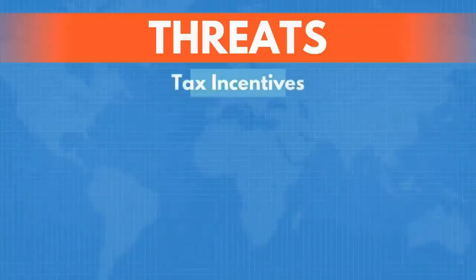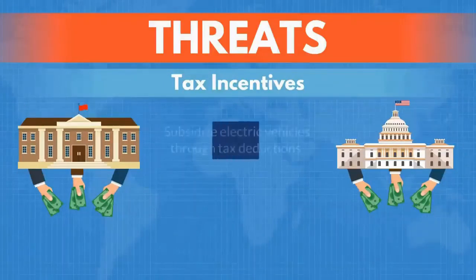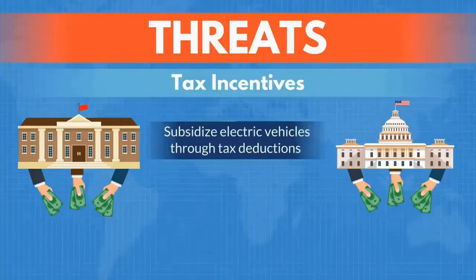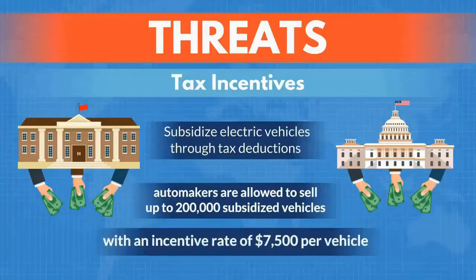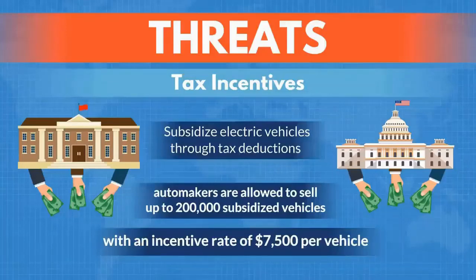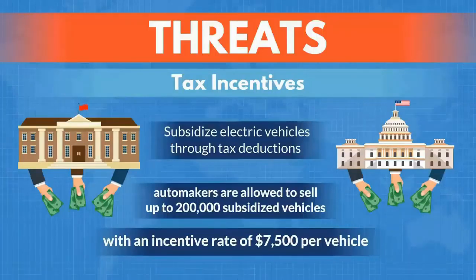Finally, one has to consider tax incentives for electric vehicles that are allowed in the US and around the world. At the moment, governments subsidize electric vehicles through tax deductions and other similar incentives. In the US, for example, automakers are allowed to sell up to 200,000 subsidized vehicles at an incentive rate of $7,500 per vehicle, after which incentives are halved to $3,750 per vehicle and so on. Although people from the automotive industry have asked for these incentives to be kept intact even after reaching the $200,000 threshold, US politicians seem reluctant to do that. So discontinuing incentives for electric cars is another significant threat for an electric producer like Tesla.